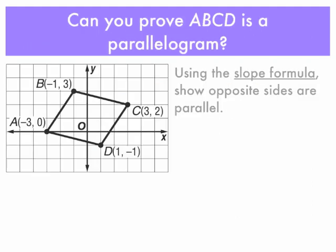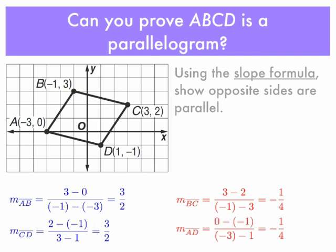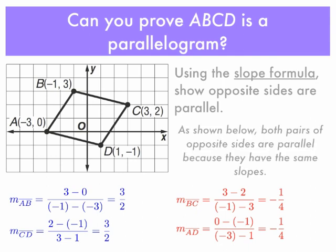Here's a different example. Can you prove that ABCD is a parallelogram using the slope formula? Using the slope formula, we would have to show that opposite sides are parallel by showing the slopes are equal. The slope of segment AB is 3/2, and the slope of segment CD is also 3/2. The slope of segment BC is negative 1/4, and likewise the slope of AD is also negative 1/4. Therefore, since both pairs of opposite sides are parallel, we can prove that this is a parallelogram.